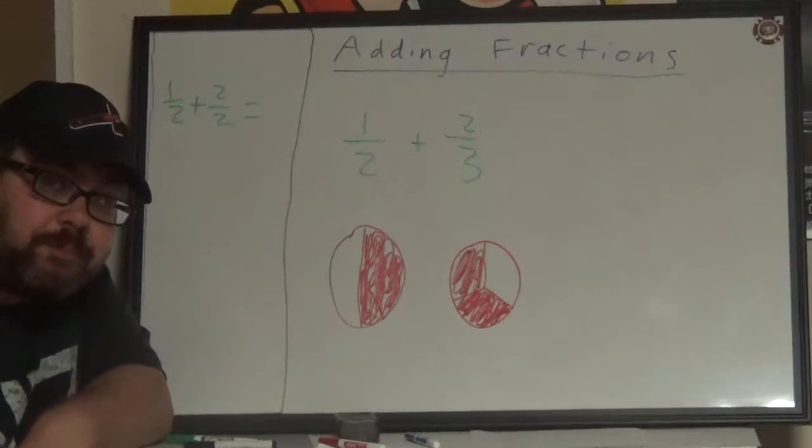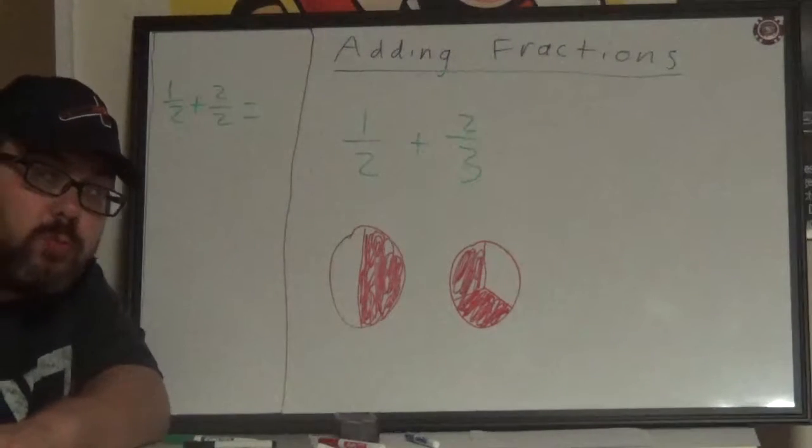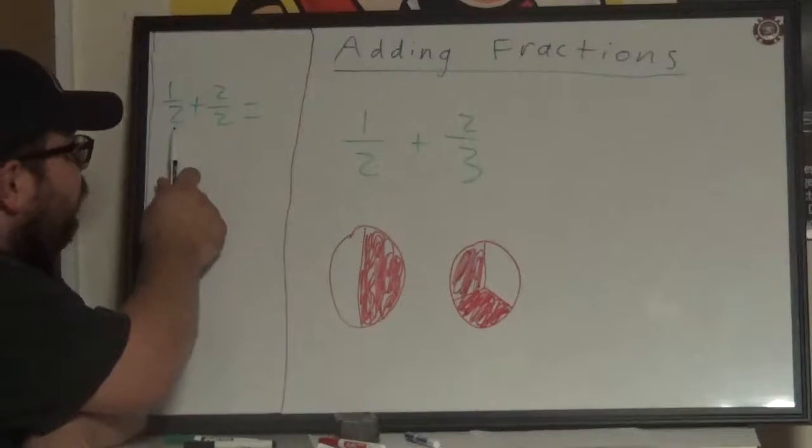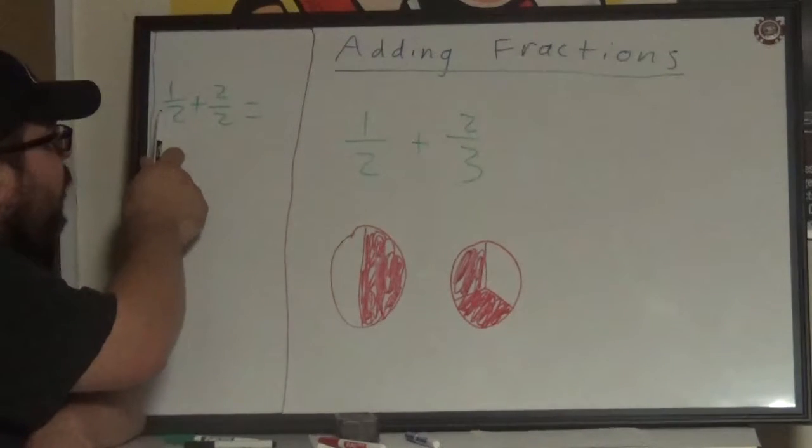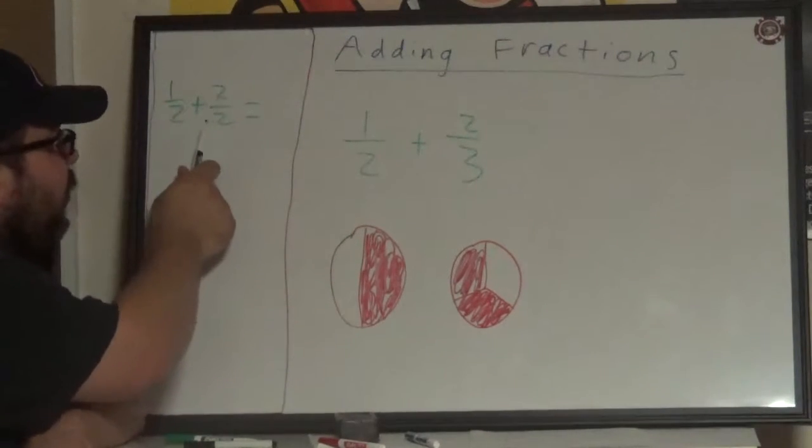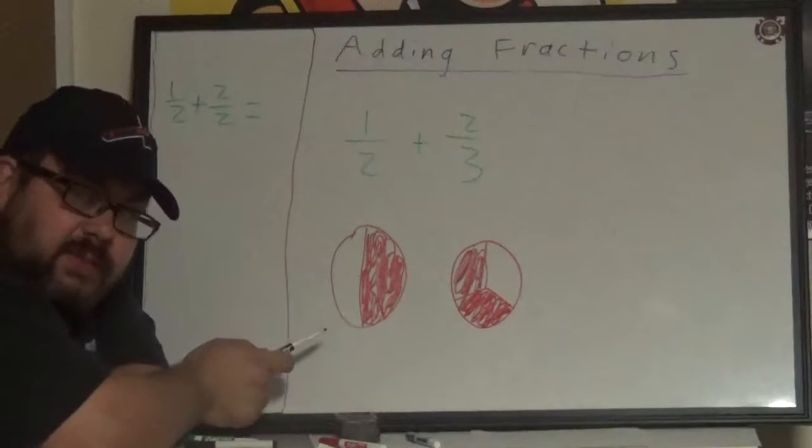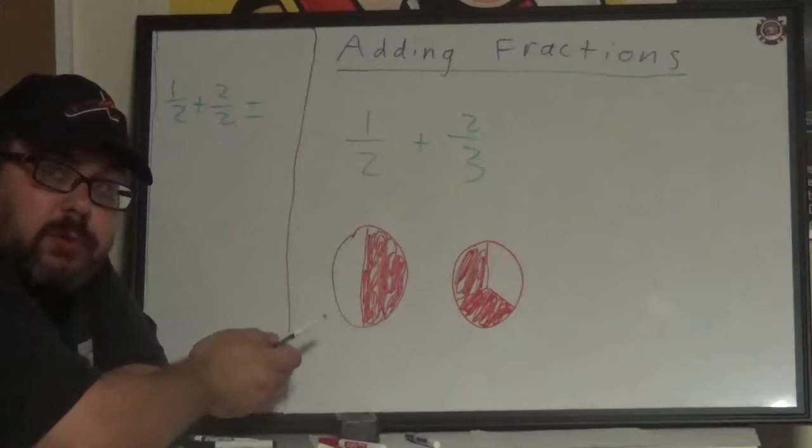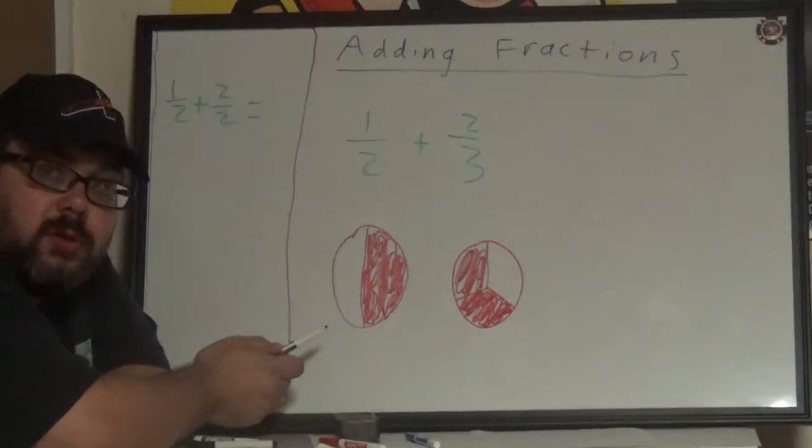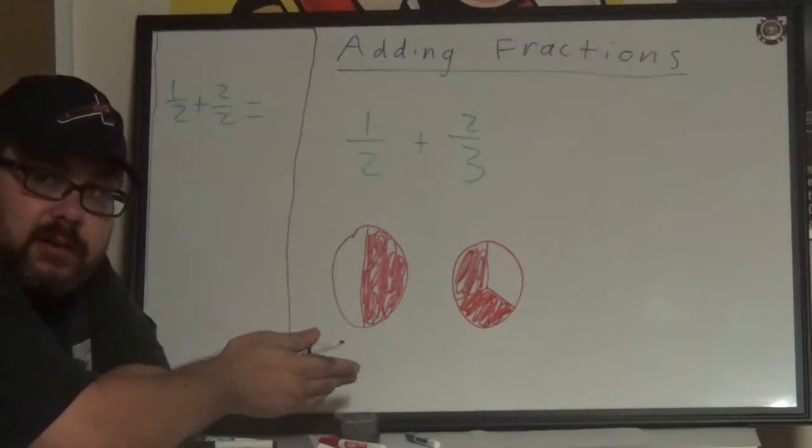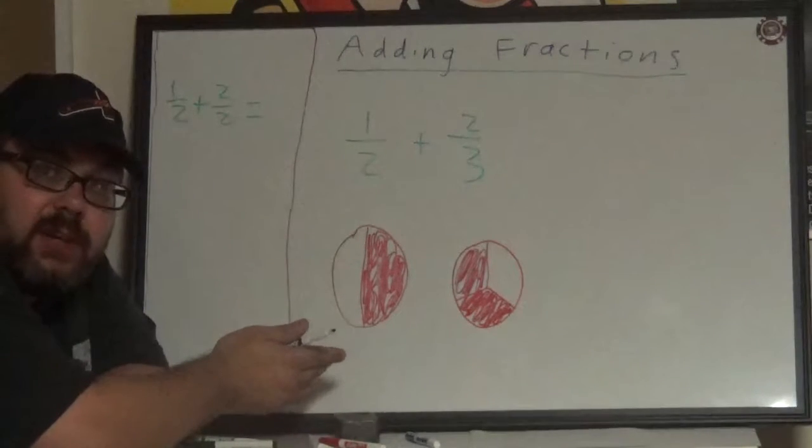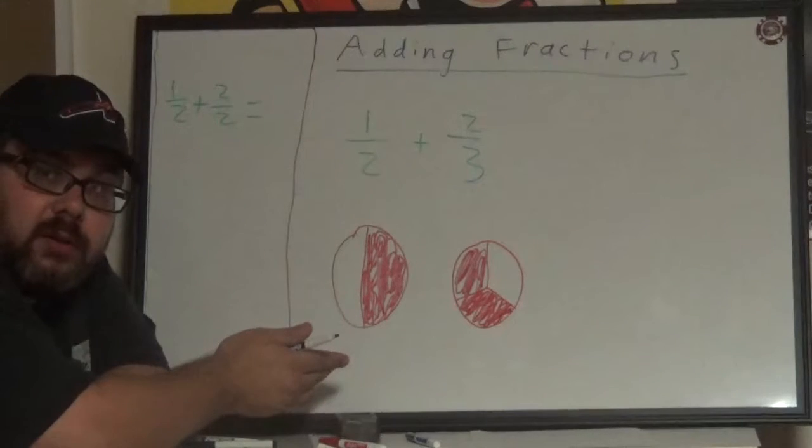So when we are adding, I'm going to start with this example: one over two plus two over two. In this example, we have two numbers that can be added because they have a common denominator, meaning the denominator is the same.